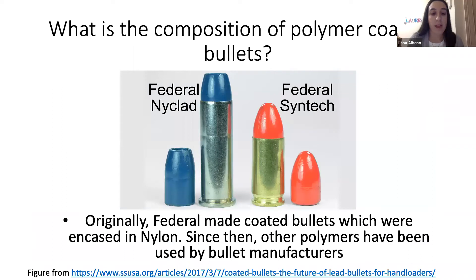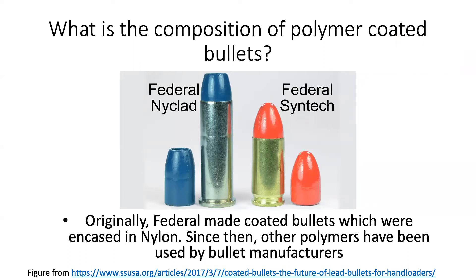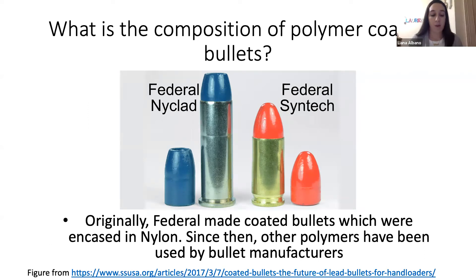Polymer-coated bullets have a synthetic jacket. The synthetic jacket reduces the wear on the bore of the gun as well as prevents metal-on-metal contact between the bullet and the bore. Additionally, polymer-coated bullets do not contain a lubrication groove. The absence of a lubrication groove prevents lead from sticking to the bore of the gun. Federal Ammunition produced nylon-coated bullets encased in nylon, which went by the name NICLAD. Since then, these coated bullets have been discontinued by Federal. A new line of ammunition released by Federal employs a synthetic jacket which encases the lead core in a polymer. It is important to determine the composition of the polymer as it can lead to knowing if the polymer contains harmful substances.